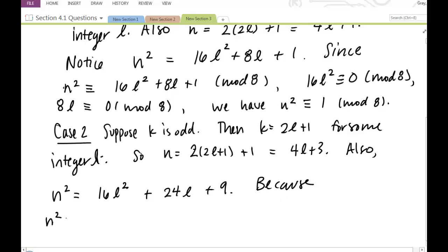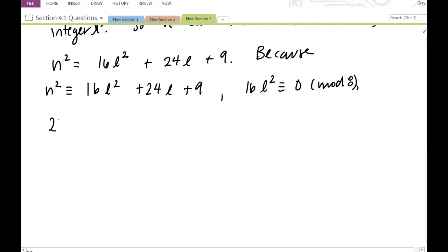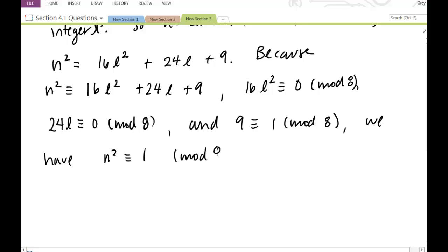Because n squared is congruent to 16l squared plus 24l plus 9 mod 8. 16l squared is congruent to 0 mod 8. 24l is congruent to 0 mod 8. And 9 is congruent to 1 mod 8. We have n squared congruent to 1 mod 8. Thus, for any positive odd integer n, n squared is congruent to 1 mod 8.